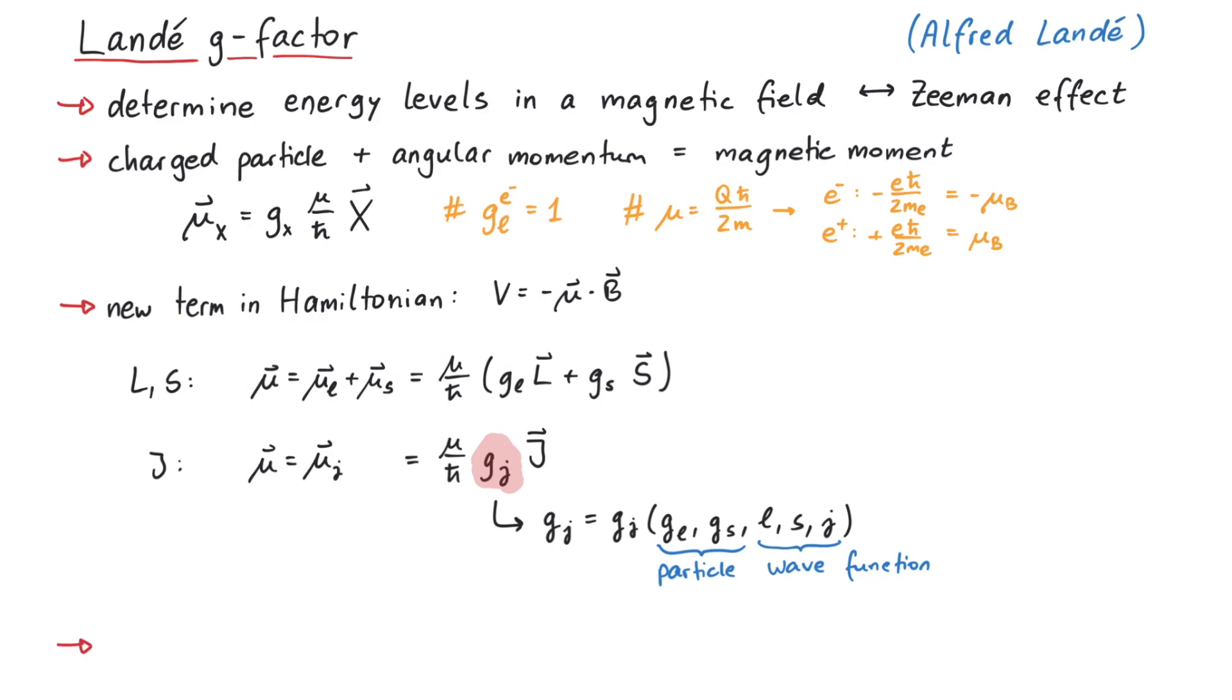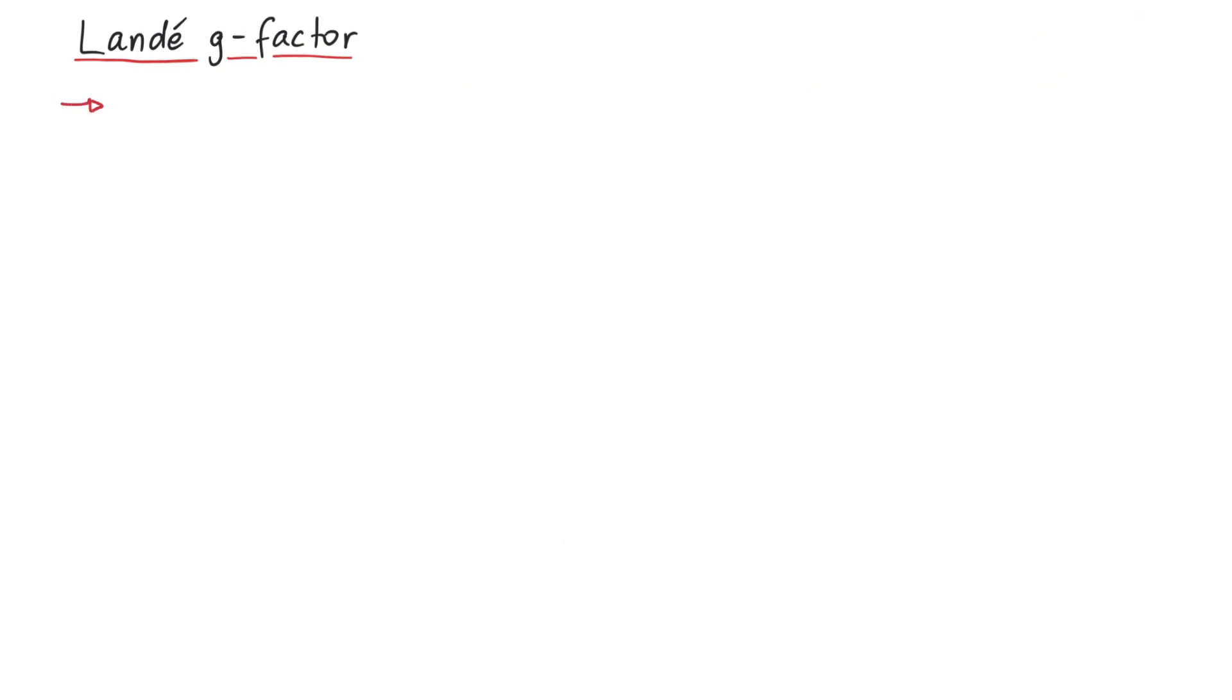For simplicity, we will always use a magnetic field which points in the z-direction. For the first derivation, we start with the following ansatz. Instead of g-l l plus g-s s, we want the magnetic moment to be given by g-j j.